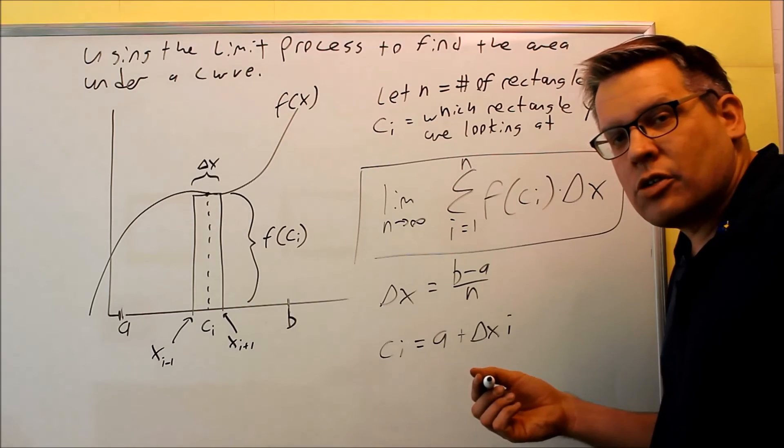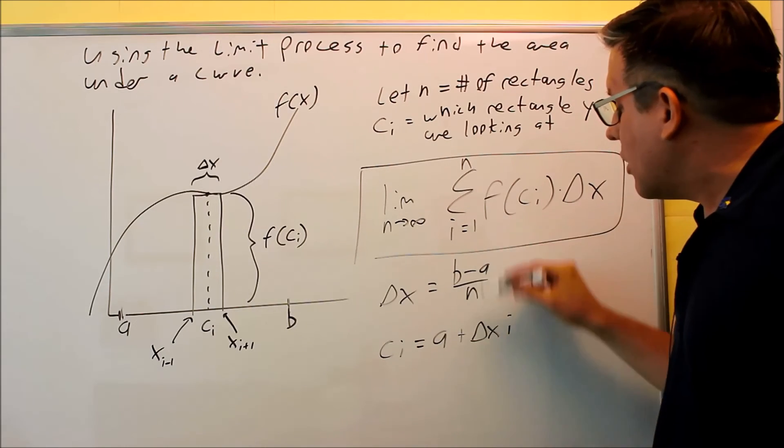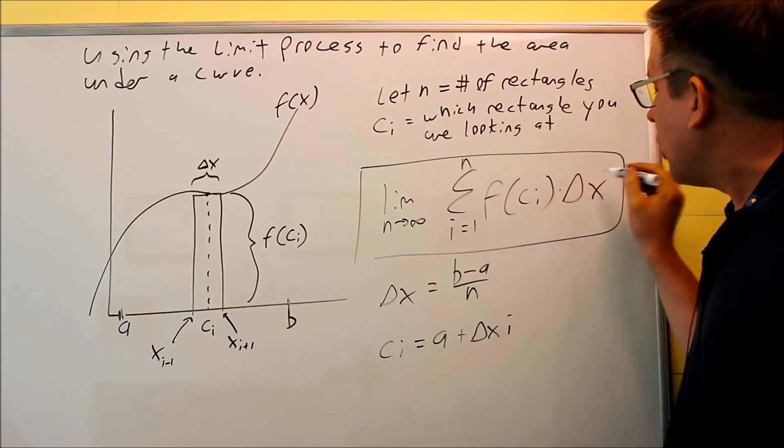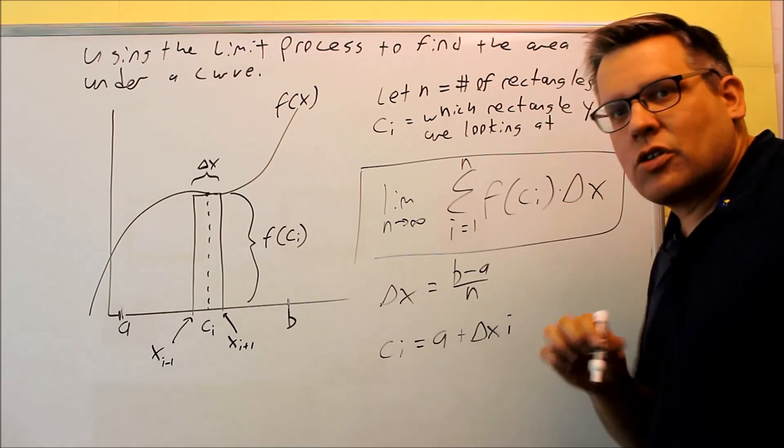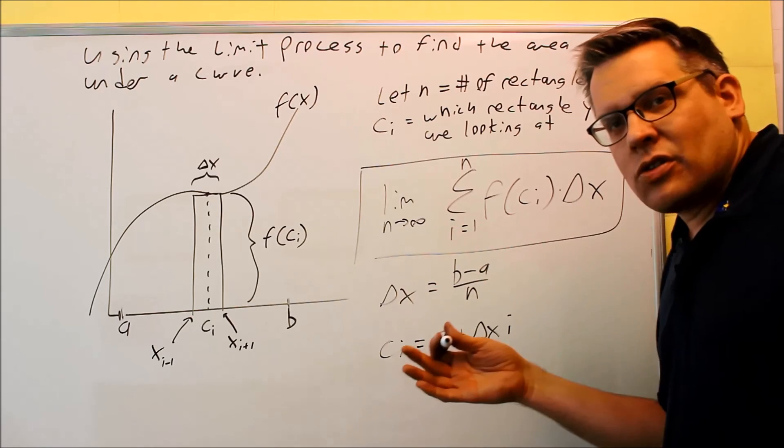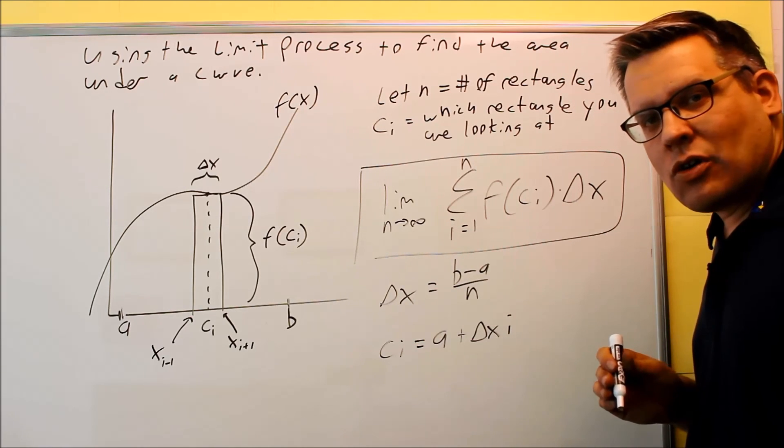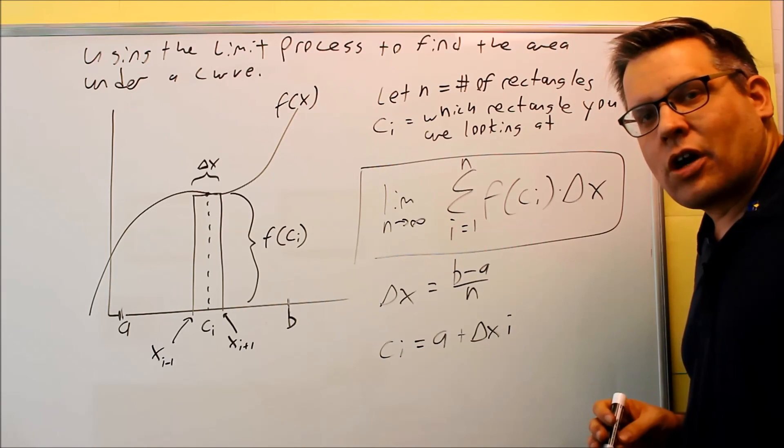So for the future problems that we're going to be doing in this section, you're going to be taking the delta X and your CI and plugging them both into this formula, and then you're going to be using a bunch of limit techniques and summation formulas and things like that to simplify it down. So that's what the next problems in this section are going to cover.